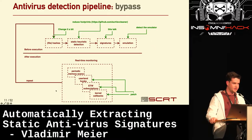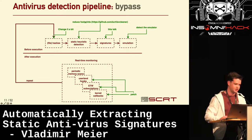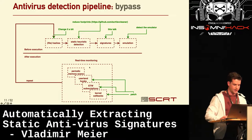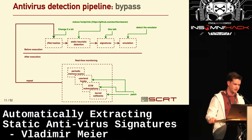Luckily for us, the antivirus has a pipeline of detections and we can also have a pipeline of anti-antivirus. For hashes, you just change a bit. For defeating static heuristic detection, we published an obfuscator that does that. For defeating signatures, that's the subject of this talk — so stay with me. To defeat the emulator, that's one way to handle it. And with regards to real-time monitoring, you can just patch the different hooks, even if they are in kernel land — there's no problem doing that, and it will make the antivirus blind.